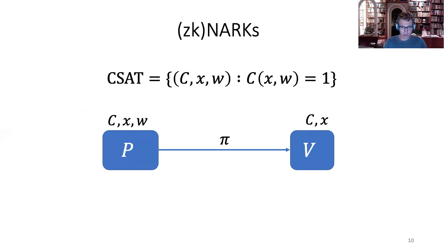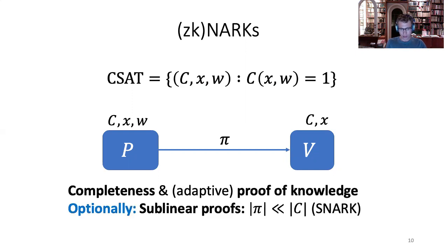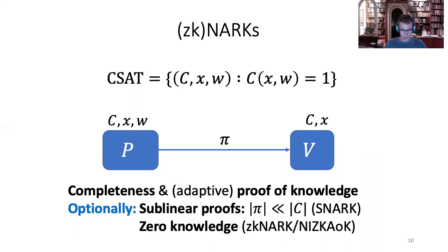Let me define NARCs. We have NARCs and ZK-NARCs, defined for circuit satisfiability. We have a circuit that takes in a public input X and some private inputs W and accepts if the circuit evaluates to one on (X, W). A NARC is simply a protocol where the prover sends a proof convincing the verifier that these private inputs exist — it's a non-interactive protocol with only a single message from the prover to the verifier. If the proofs are sublinear, we call this a SNARK. If it is zero-knowledge, we call it a ZK-NARC or NIZK.